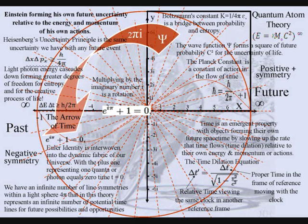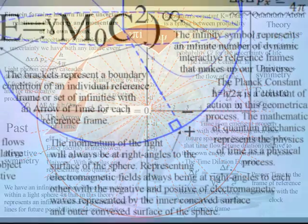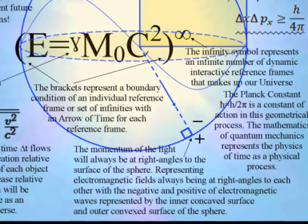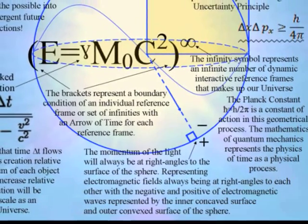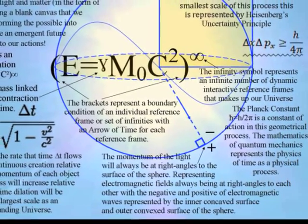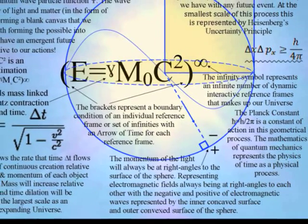We have an infinite number of line symmetries within a sphere, representing an infinite number of possible timelines, as the future unfolds, with each new photon oscillation. The momentum of the light will always be at right angles to the surface of the sphere, and it is because of this dynamic geometry that electromagnetic fields are always at right angles to each other.